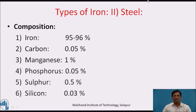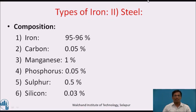Second type of iron is steel. Composition: iron 95 to 96 percent, carbon 0.05 percent, manganese 1 percent, phosphorus 0.05 percent, sulphur 0.5 percent, silicon 0.03 percent. This is the composition of steel.